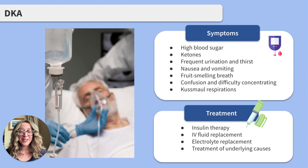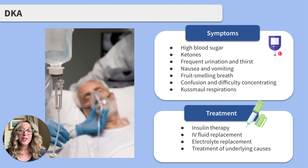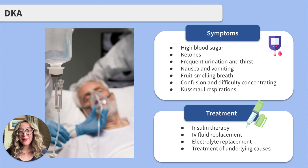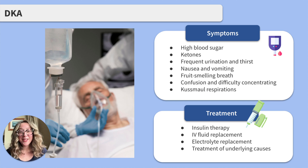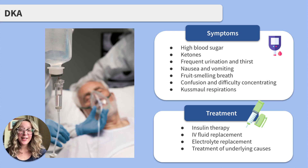You would expect this client to exhibit high blood sugar levels, ketones in the urine or blood, frequent urination and thirst, nausea and vomiting, fruity smelling breath, confusion and difficulty concentrating, and rapid breathing, known as Kussmaul respirations.